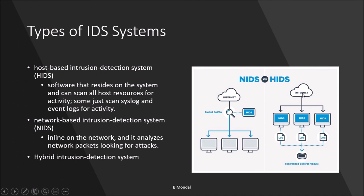In a host-based IDS, there is no scanner on the network. Packets from the internet hit the host machine directly, but the host system logs everything about the packets, then analyzes the logs to decide whether an intrusion has occurred. A hybrid IDS combines both: a network-based scanning device plus host computers configured with proper logging.